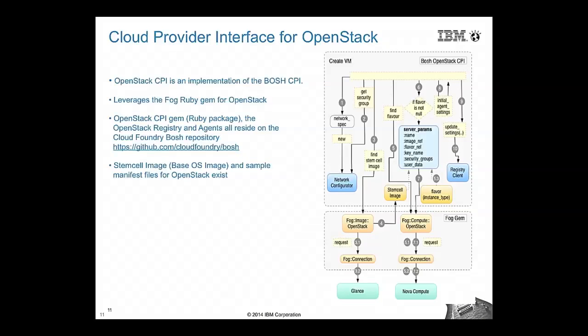This chart gives a brief overview of the OpenStack CPI, or Cloud Provider Interface. Any IaaS provider deploying Cloud Foundry needs to implement this interface. For OpenStack, it has been implemented using the fog gem — a Ruby gem written to interact with OpenStack APIs — providing basic functionalities like launching a VM, deleting a VM, provisioning a disk, and attaching a disk to a VM.